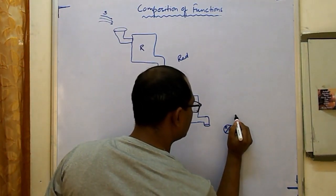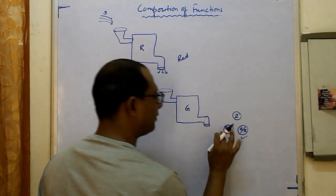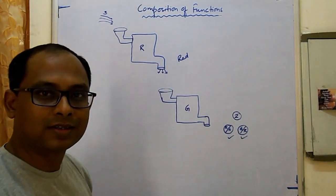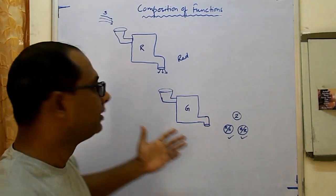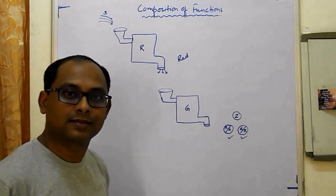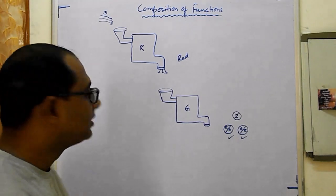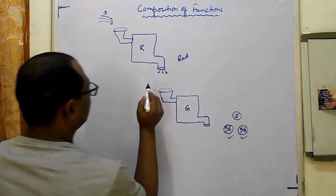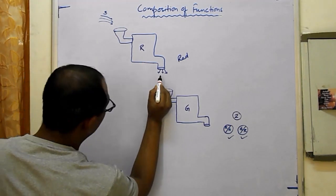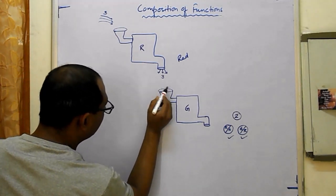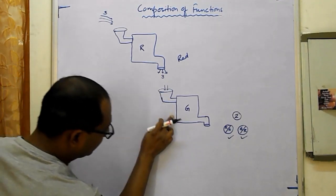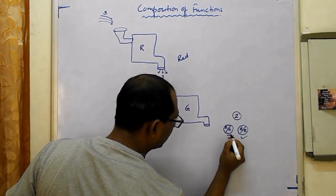Suppose we put three tennis balls into the first machine. They come out with red color, but only two go into the green machine, so we get only two balls with both colors. The input was three and the final output was two. This means one ball didn't go into the second machine — only two went inside and got both colors.